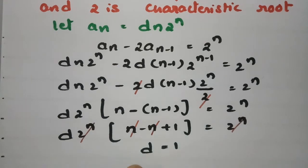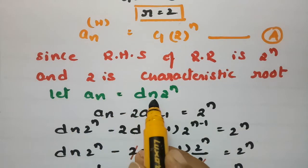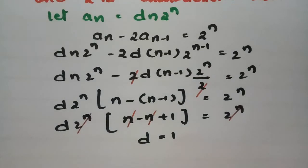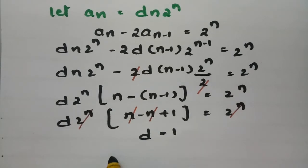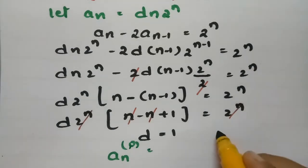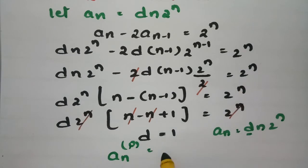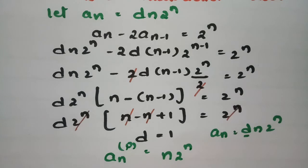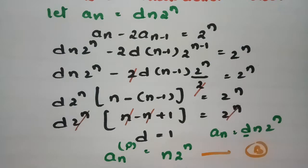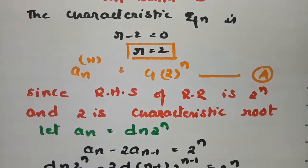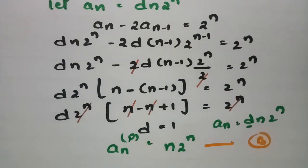With d = 1, the particular solution is aₙ⁽ᵖ⁾ = n·2ⁿ. This is the particular integral for our non-homogeneous recurrence relation.